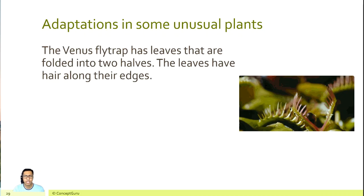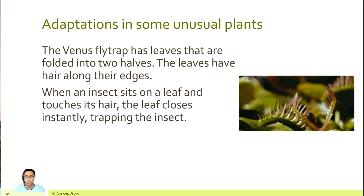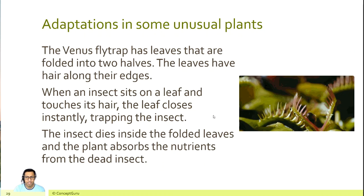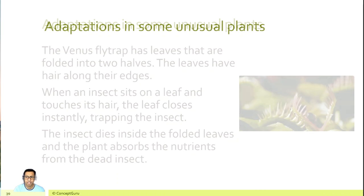The Venus flytrap has leaves that are folded into two halves. The leaves have hair along the edges. When an insect sits on a leaf and touches its hair, the leaf closes instantly, trapping the insect. The insect dies inside the folded leaves and the plant absorbs the nutrients from the dead insect.